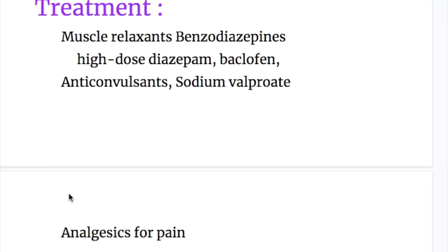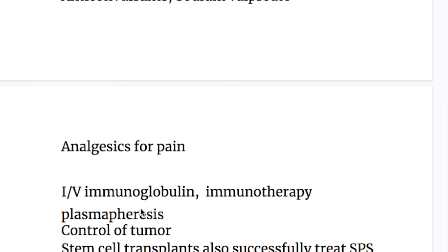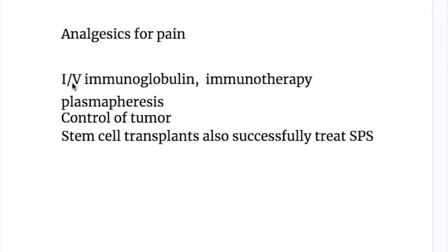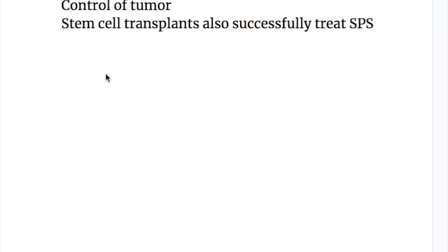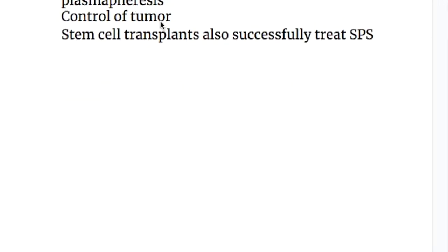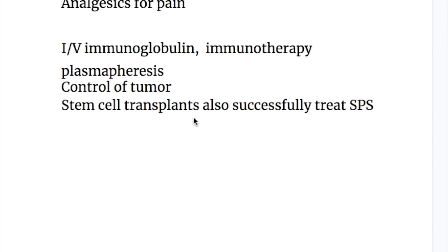Treatment of stiff person syndrome includes muscle relaxants, benzodiazepines, high-dose diazepam and baclofen, anticonvulsants like sodium valproate, and analgesics for pain control. IV immunoglobulins, immunotherapy, and plasmapheresis are also effective. Control of any underlying tumor should be done, and stem cell transplants have also successfully treated stiff person syndrome.